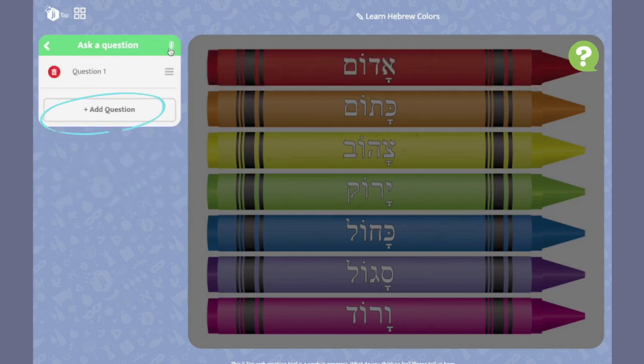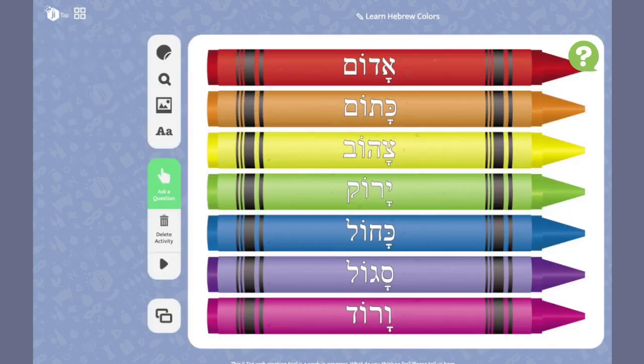Click here to add another question, and here to reorder your questions. When you're done, click back to edit the activity editor.